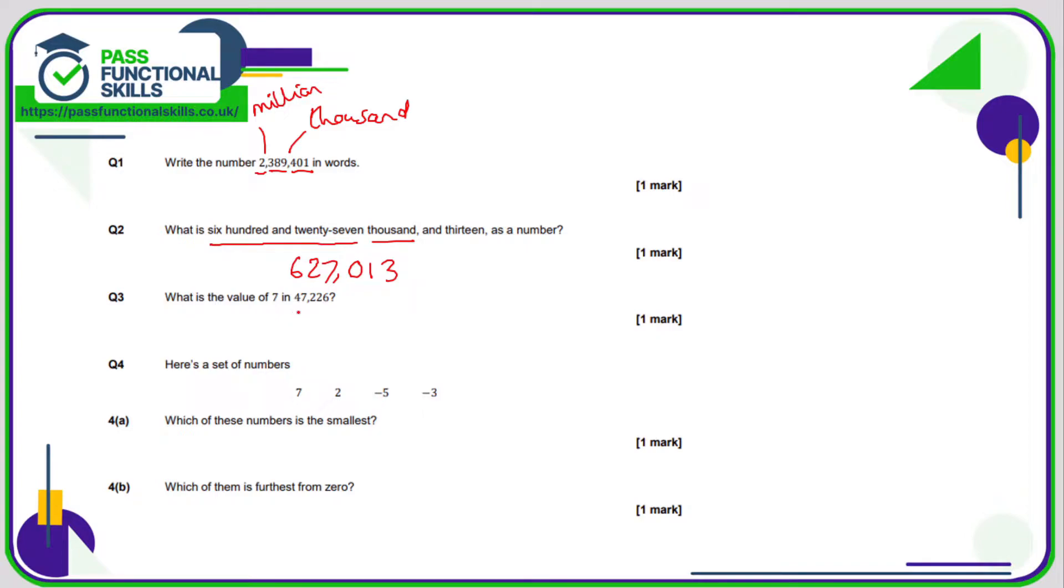Question number three, what is the value of the seven in this number? Well, the six is in the units column, so that has a value of one. The two is in the tens column. This two is in the 100s column. So therefore this seven is in the 1,000 column. So the value of the seven is seven lots of 1,000, which is 7,000.